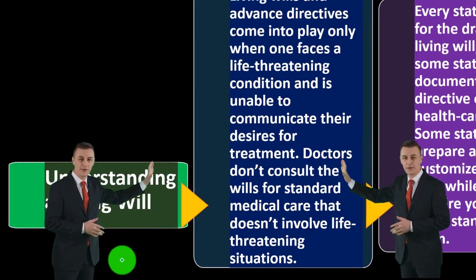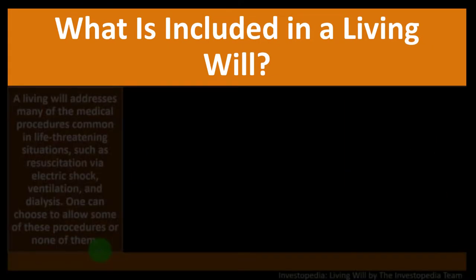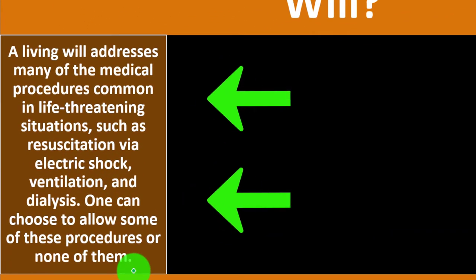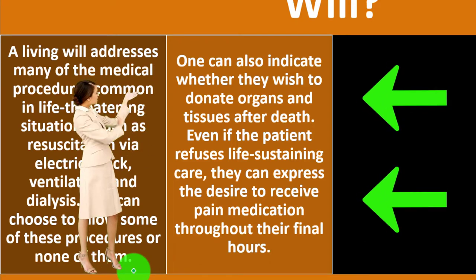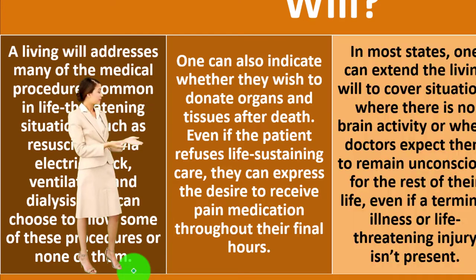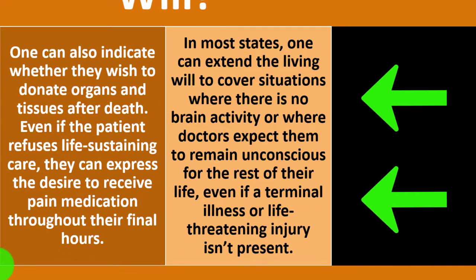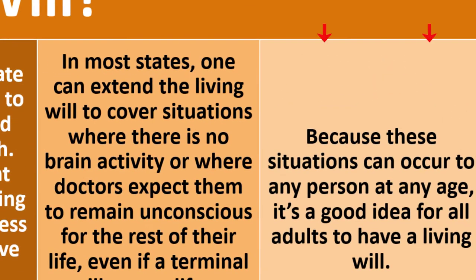What is included in a living will? A living will addresses many medical procedures common in life-threatening situations, such as resuscitation via electric shock, ventilation, and dialysis. One can choose to allow some of these procedures or none of them. One can also indicate whether they wish to donate organs and tissues after death. Even if a patient refuses life-sustaining care, they can express the desire to receive pain medication throughout their final hours. In most states, one can extend a living will to cover situations where there is no brain activity or doctors expect the person to remain unconscious for the rest of their life.